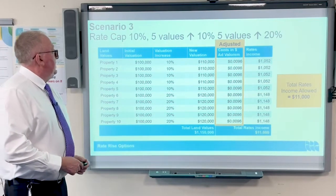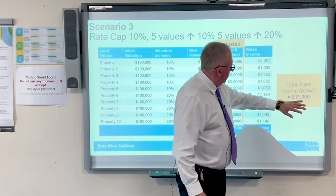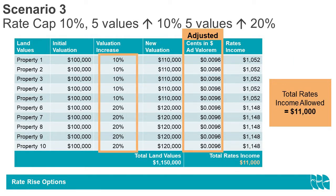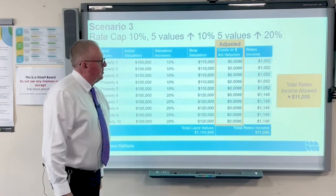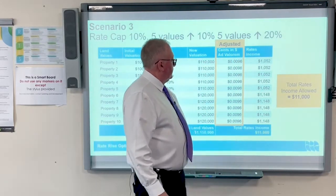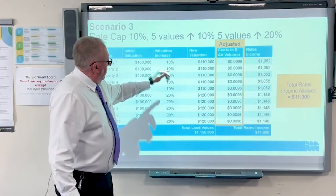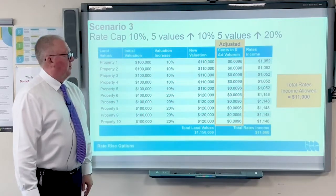Now the next scenario is when we have a rate cap. We started with a rate amount of $10,000, and we're assuming the rate cap allows a 10% increase, so we're allowed to levy $11,000 — that's the total amount of rates we can raise. Again, the valuation increases are 10% and 20% for different properties, bringing total new valuations to $1.15 million. Dividing that into the rates income gives a new rate in the dollar. Multiplying one by the other shows various changes to individual accounts: for the smaller land valuation increase of 10%, the rate increase is 5.2%, and for the others it's 14.8%, taking into account those extra rates.